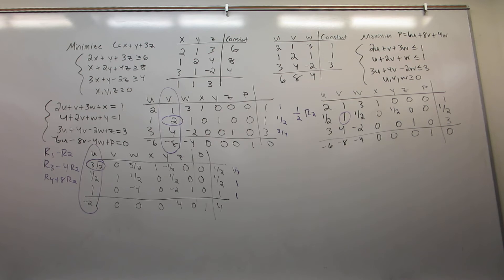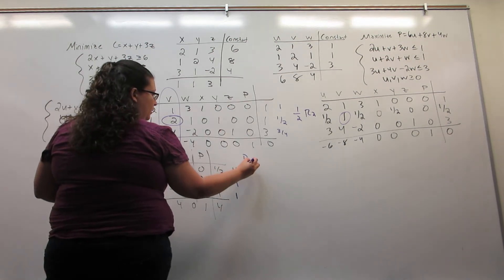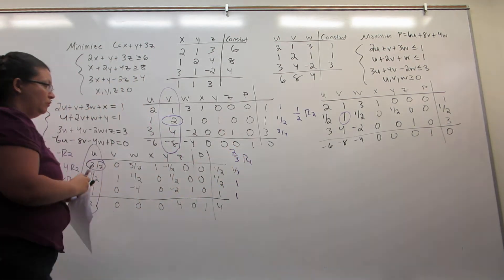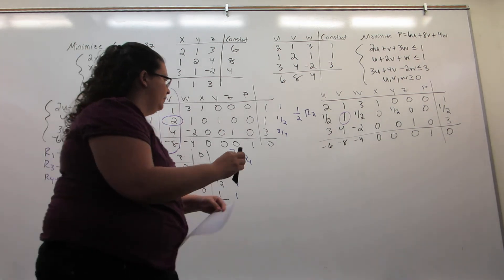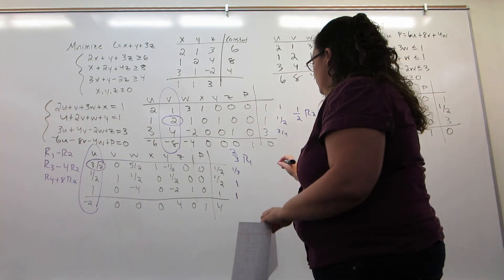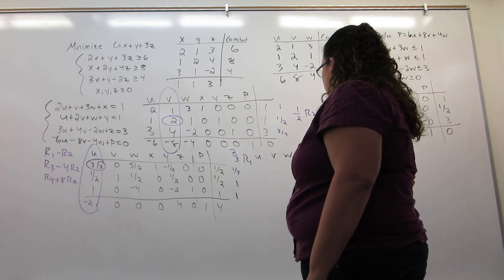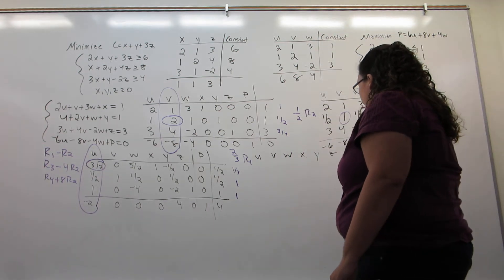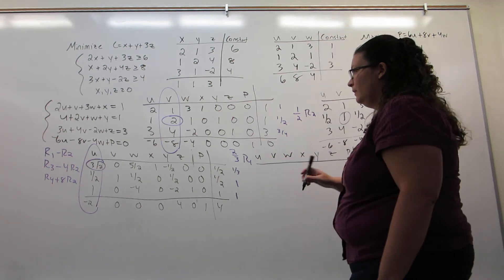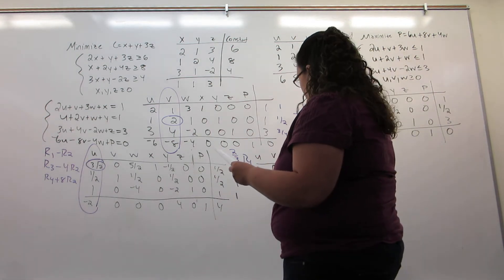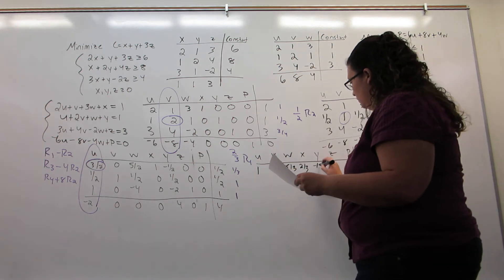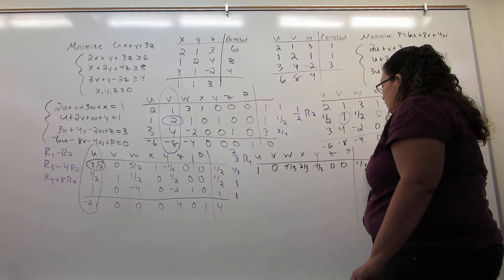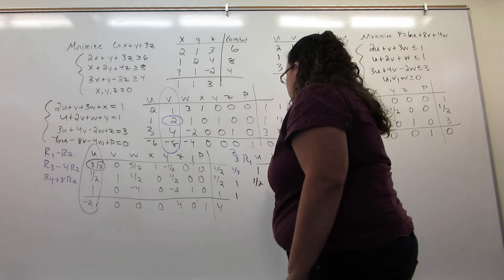We need to make it a one, so we're going to replace row one with two-thirds times row one to guarantee the number one where we want it. And all our other rows are staying the same.